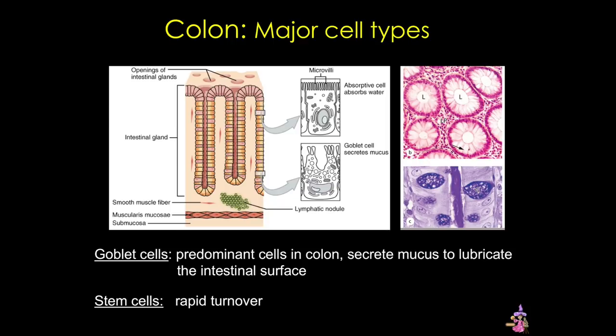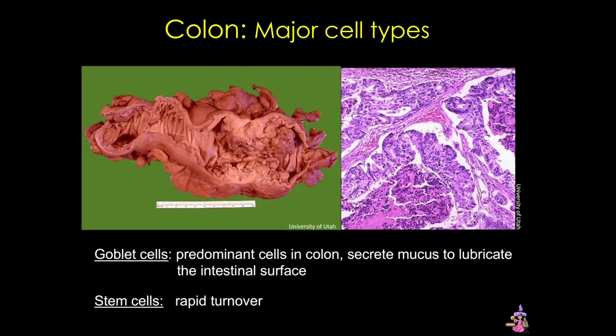This rapid turnover is also a major reason that the colon is at increased risk of malignancies. In fact, colorectal cancer is one of the most common cancers. It develops from benign adenomatous polyps in the mucosal epithelium. Here you can see both a gross and microscopic section of an adenocarcinoma of the colon.